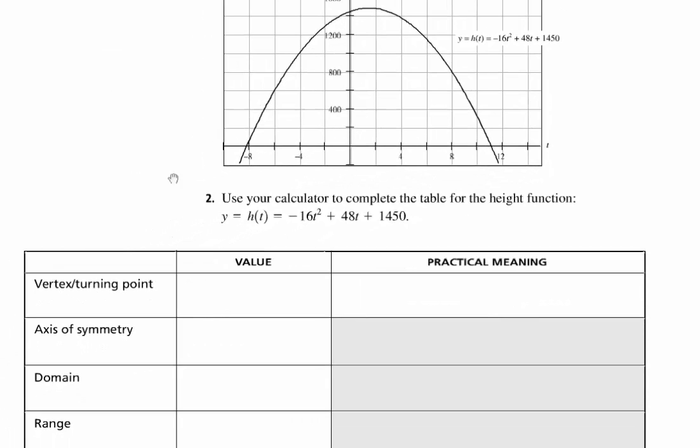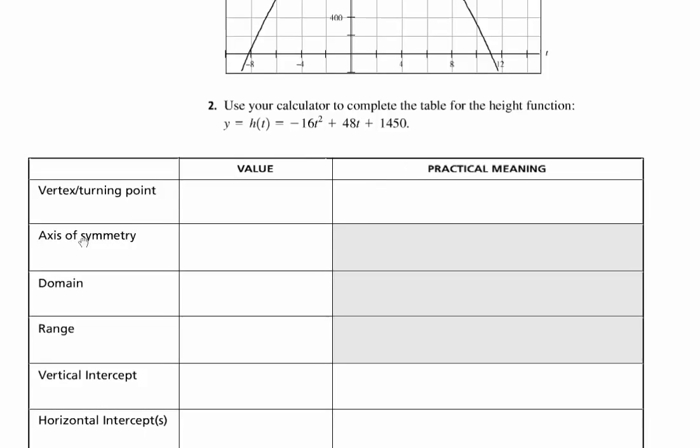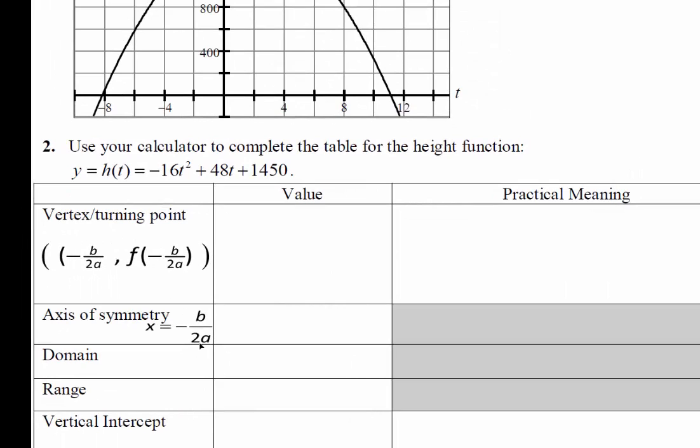So let's answer these questions. I'm actually going to go out of order. I want to start with the axis of symmetry. Remember the formula was negative b over 2a. So I've put that in here. Axis of symmetry equals negative b over 2a. And really you should think about this as the equation of the axis of symmetry. It's really an equation.